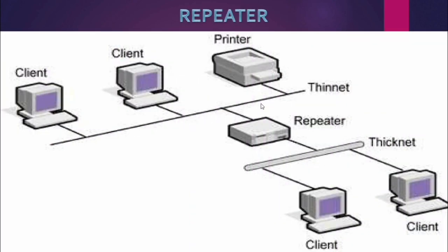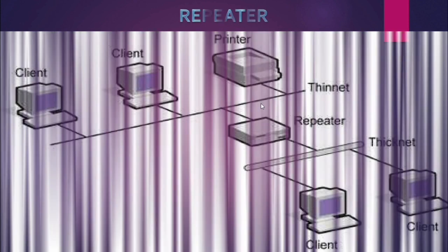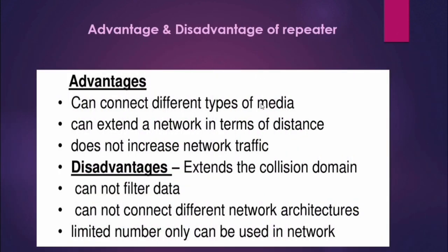In this pictorial representation, you can see a thin net and thick net — types of coaxial cables. There are two types of coaxial cable: thick net and thin net. These connections can be merged together or the connection speed can be regenerated using this repeater to regenerate the power of the connection.